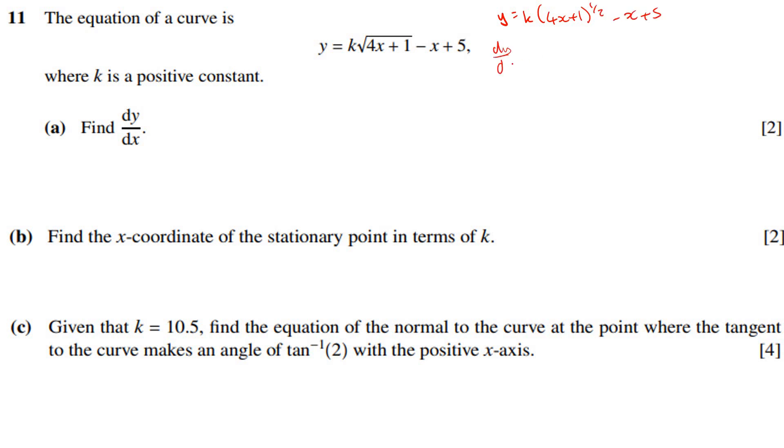Therefore dy by dx, bring down the power, take one off the power and multiply by the derivative. When you bring down the half and multiply by 4, half times 4 is 2, so you're going to get 2k, lots of 4x plus 1, raised to the power of negative 1 half, subtract 1. That's going to be our derivative. There you go, done.